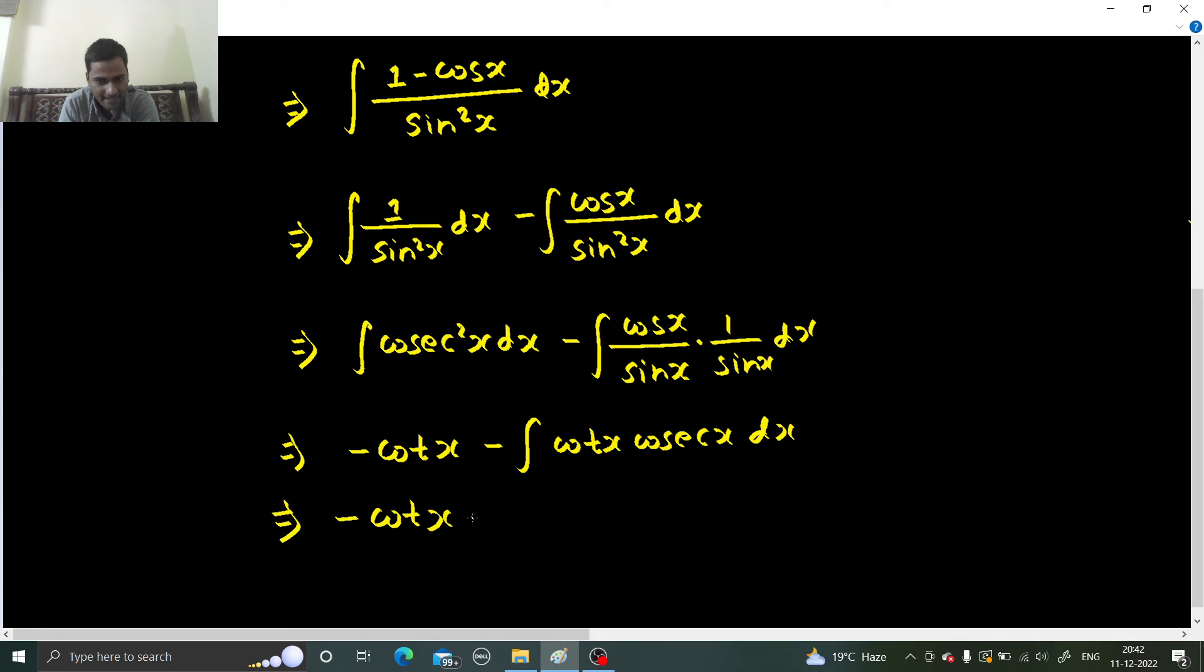So minus minus plus of cosecant x plus a constant c at the last. Fine. Again, easy problem.